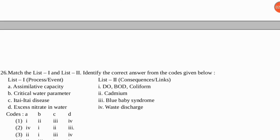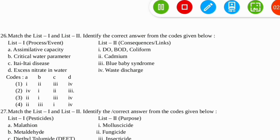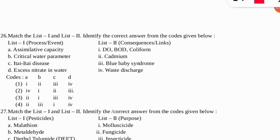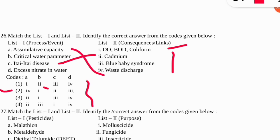The next question: match the process or event with the correct consequences. Itai-Itai disease is caused by cadmium poisoning — that matches with option C. Option A (assimilative capacity) is linked with waste discharge. Option B (critical water parameter) is linked with dissolved oxygen, BOD, and coliform. And excess nitrate in water causes blue baby syndrome. So the correct option is number two.